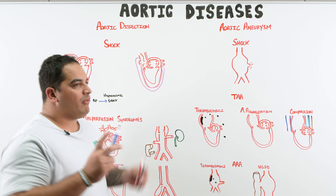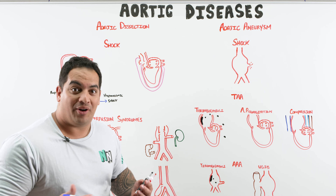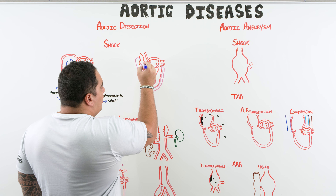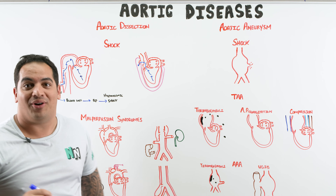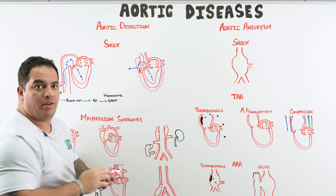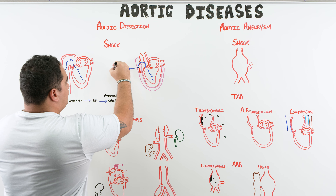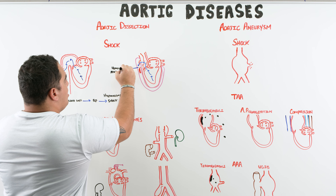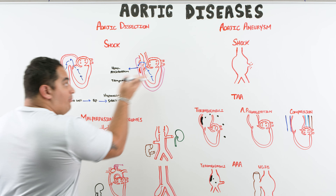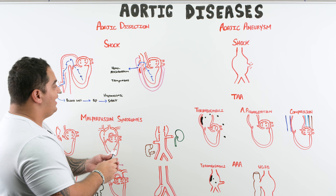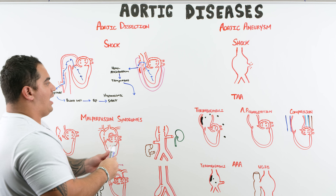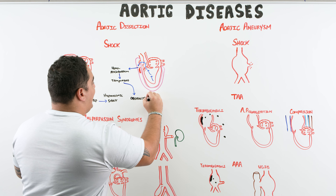The second type of shock: if you recall from pericardial disease, cardiac tamponade can be caused by hemopericardium. In an ascending aortic dissection, blood can rip through the intima and then through the aortic wall into the pericardial sac, causing hemopericardium. As blood accumulates rapidly, it causes cardiac tamponade — compressing the heart, preventing filling, and leading to shock.